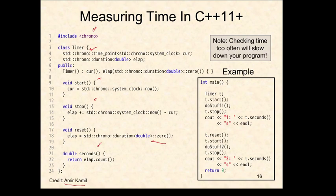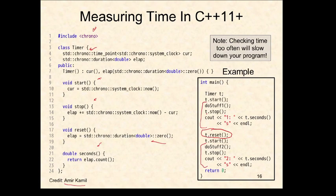Reset the timer between tasks if you want separate timings - reset goes back to zero elapsed time, then start again, do stuff two, stop the timer, and print how long it took. The timer itself takes time to run start, stop, and reset calls, so be careful about doing this too often. Don't start and stop the timer inside a loop - start the timer before the loop, run the complex code with the loops, then stop the timer afterward.